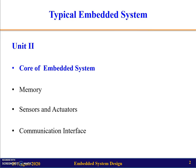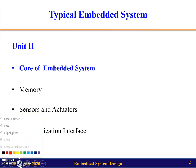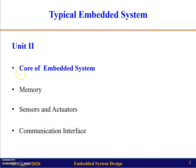The components of the embedded system include the core, memory, sensors and actuators, and the communication interface. In this lecture we will be studying the core of embedded systems — the heart or brain of the embedded system — because for any embedded system the input needs to be collected, processed, and control signals sent to the output. This processing is done by the core. In the next lecture we will also cover memory.